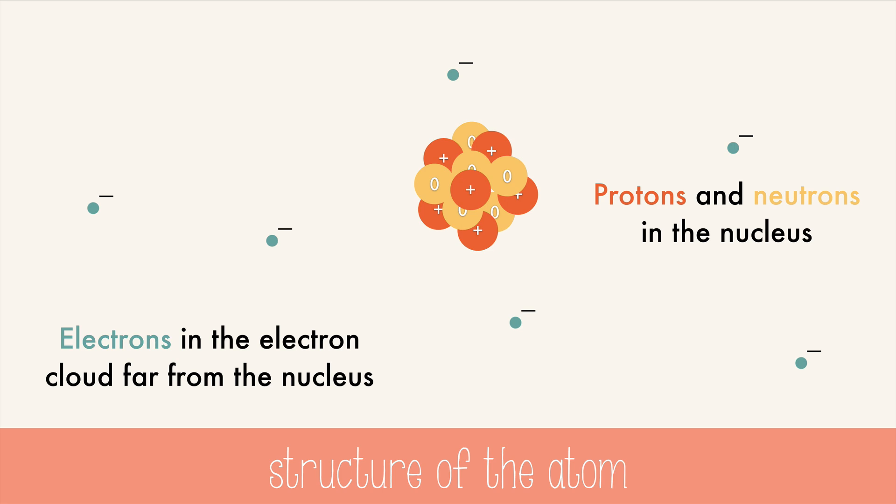In a neutral atom, there are as many protons as there are electrons. For example, this is a carbon atom and has 6 protons in the nucleus and 6 electrons in the electron cloud. Their charges cancel, creating a neutral atom.